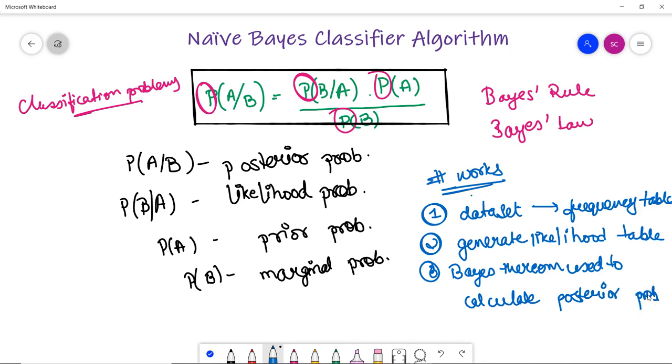These are the few steps which it includes on a particular data set. Next we are going to discuss the types of Naive Bayes model, or we can say what are the types of classifiers.